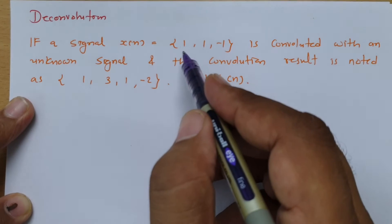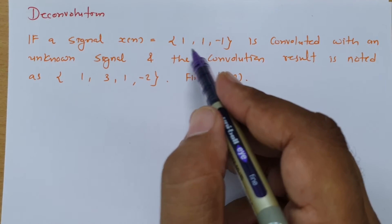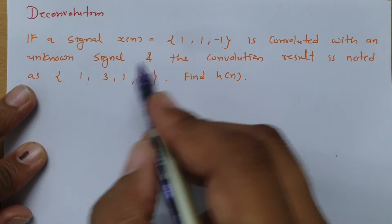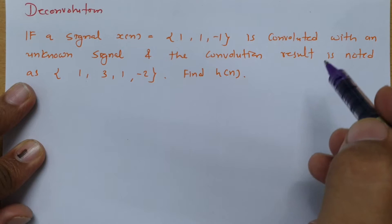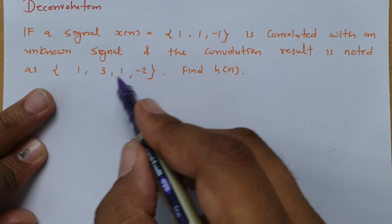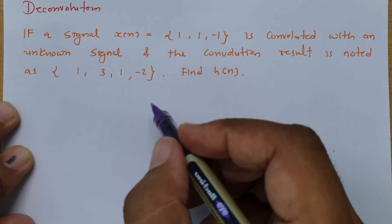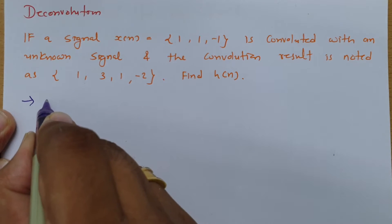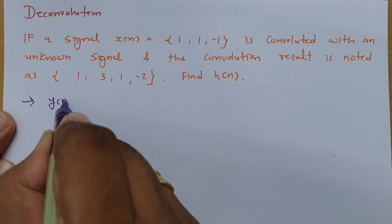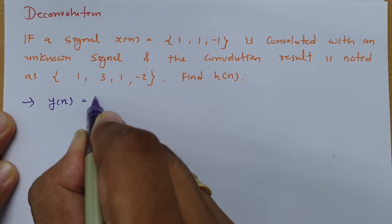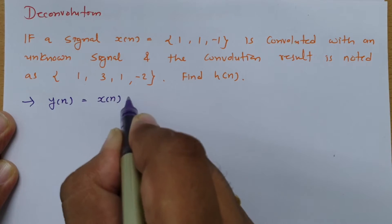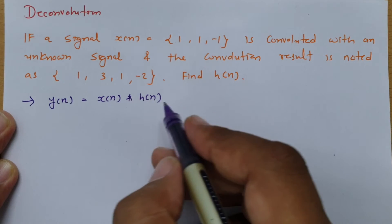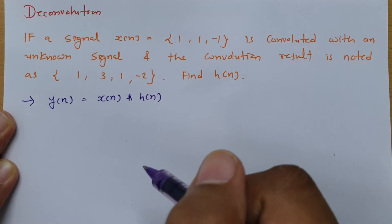A signal x of n is given as {1, 1, -1}, and that is convoluted with an unknown signal. The convolution result is noted as {1, 3, 1, -2}. So if y of n equals x of n convolved with h of n, we need to identify what h of n is — the unknown signal.